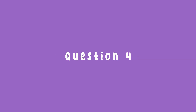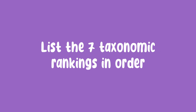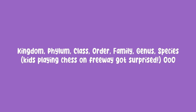Question 4. List the 7 taxonomic rankings in order. The answer is Kingdom, Phylum, Class, Order, Family, Genus and then Species.